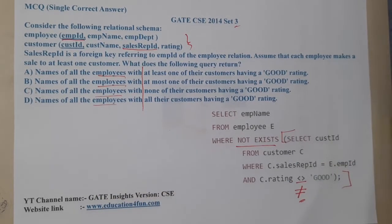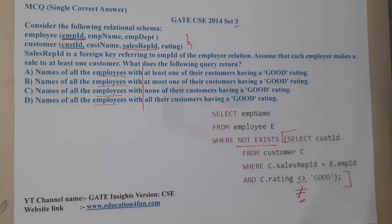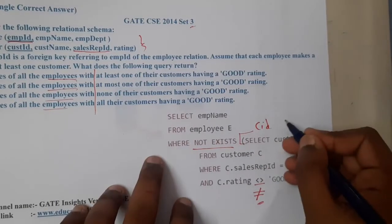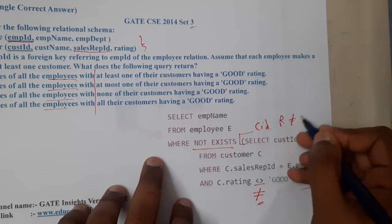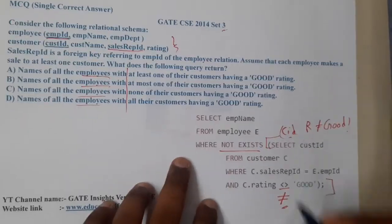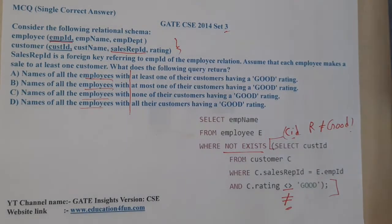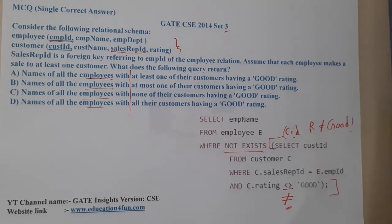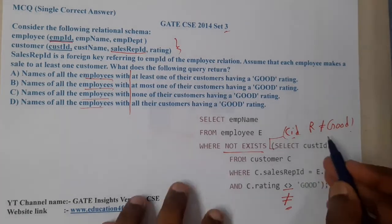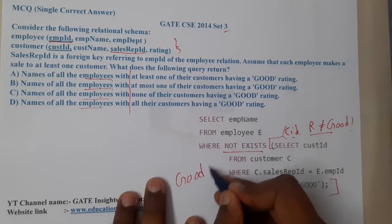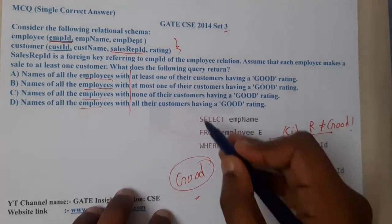So not equal to good rating. Indirectly, what we are trying to get here are the customer IDs of customers who did NOT give a good rating — other than good rating, whatever they gave. So all those customer IDs are collected here: customer IDs where rating is not equal to good. Now we check the WHERE condition with NOT EXISTS. We are eliminating non-good ratings, so what is left are those who gave good ratings.